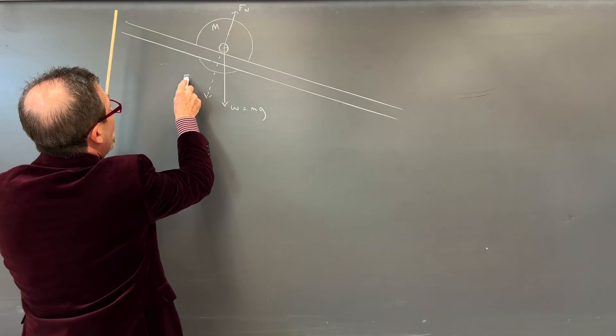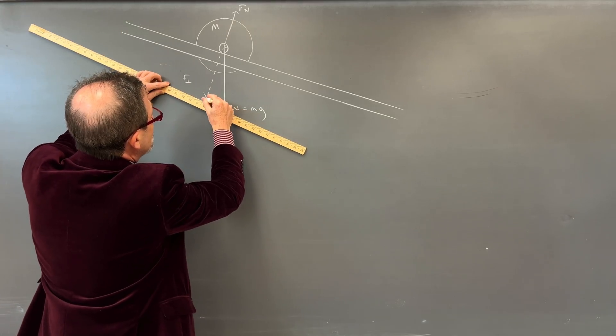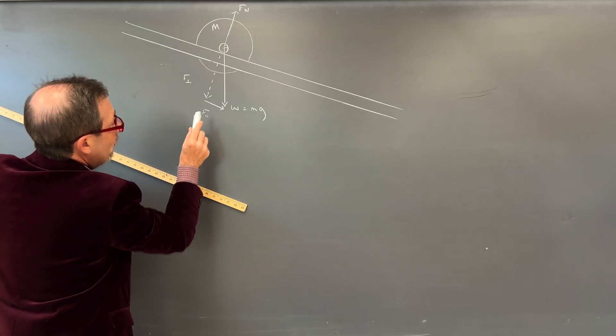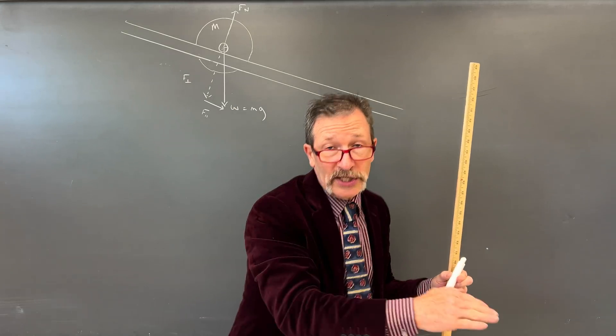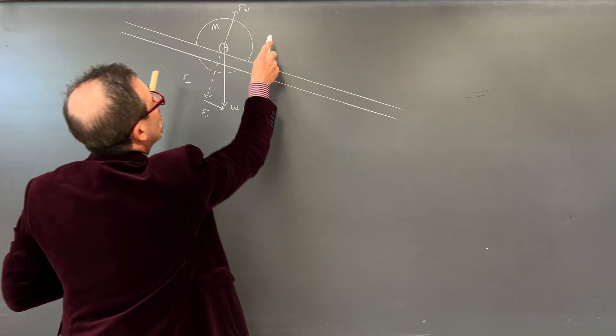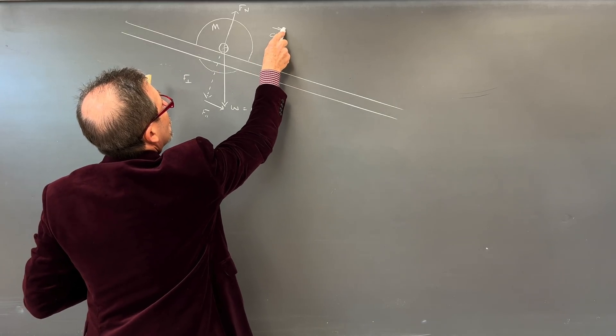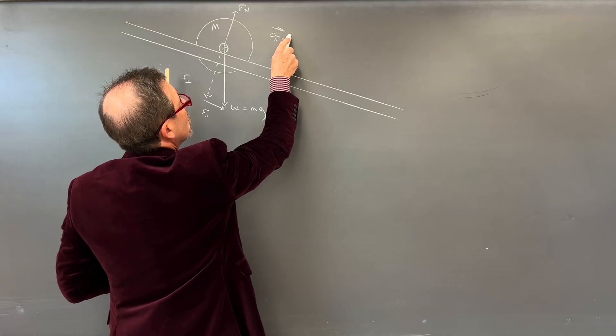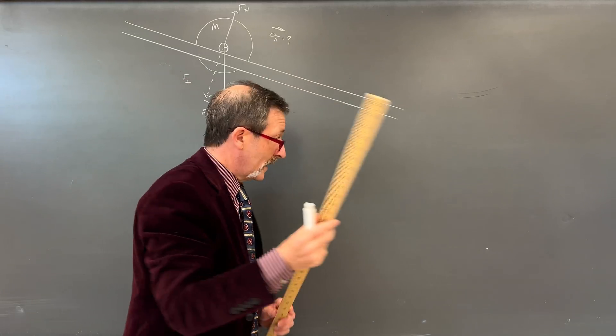And this is going to be the force right here, that force parallel. That's what's actually going to cause it to go down the slope. And I'll say we're looking for the acceleration parallel to our slope.